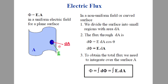What is electric flux? We have already discussed this in the last class. It is the number of electric field lines passing perpendicular through an area. So electric flux through an area in a uniform electric field for a plane surface may be written as E dot A.